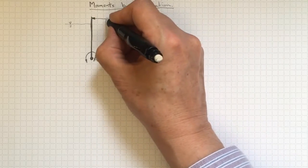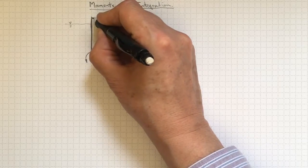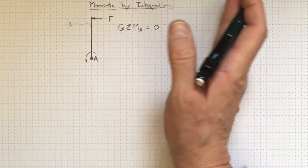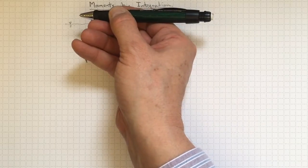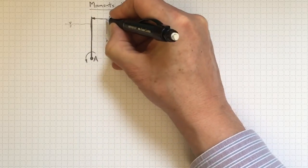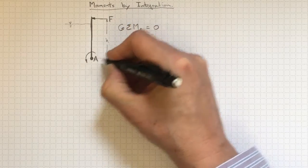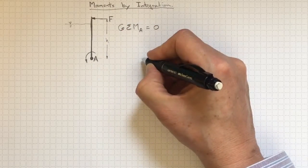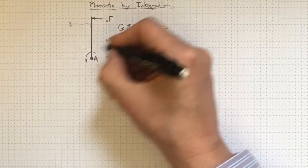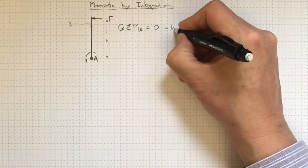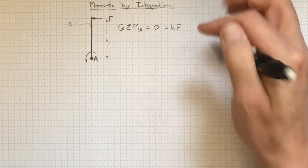well, one moment is coming from this force. That's the only thing that's keeping this gate from falling over this way. And that force is acting up here at some distance away, H, up from the center of rotation. So there is a counterclockwise moment due to this force of H times F.